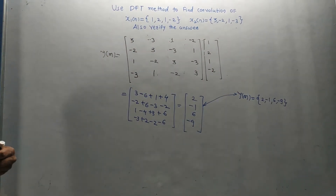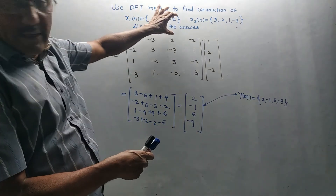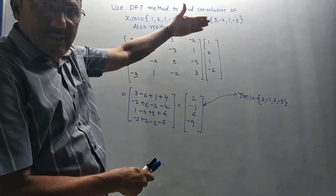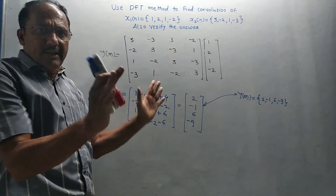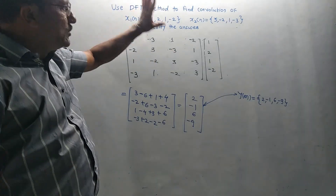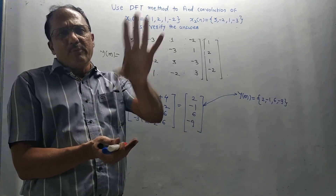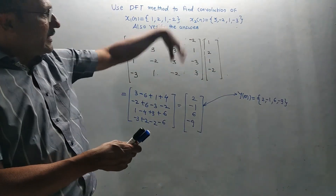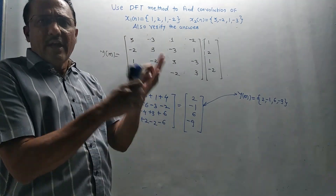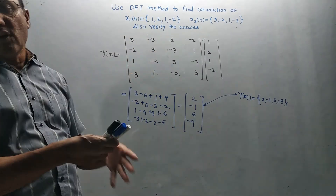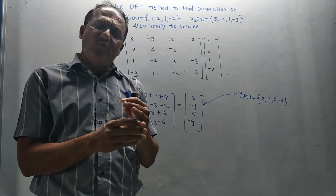This is how the answers can be verified. Remember: if the question specifically says to verify using the graphical method or concentric circle method, you must follow that method. At the beginning of this video, I mentioned I will provide links to other relevant videos on circular convolution and complex mode calculator usage. That's it for today's video — if you like it, don't forget to smash the like button. Thank you very much.